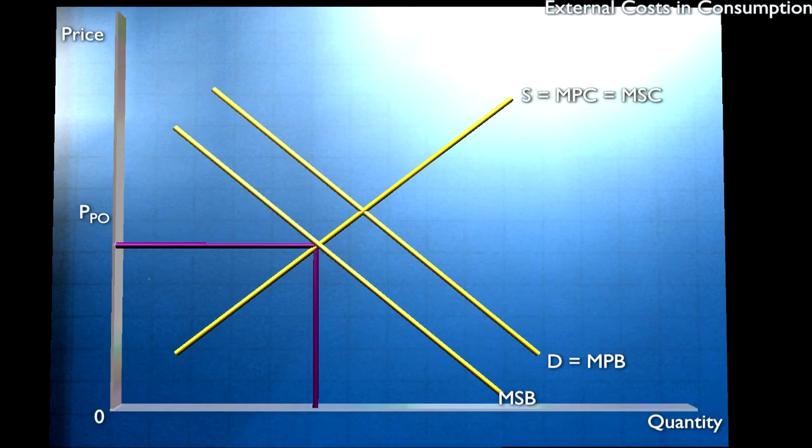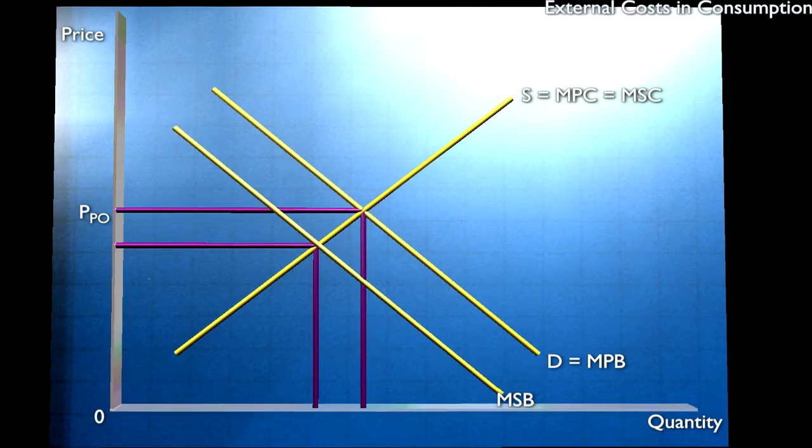This means that the marginal social benefit and the marginal private benefit don't coincide. And as a result, the private optimum amount of cigarettes that will appear in the market, QPO, is greater than the socially optimal level of cigarettes, QSO.